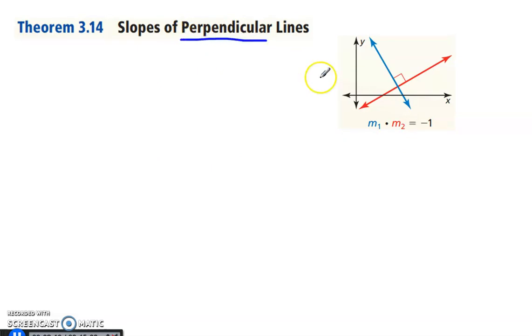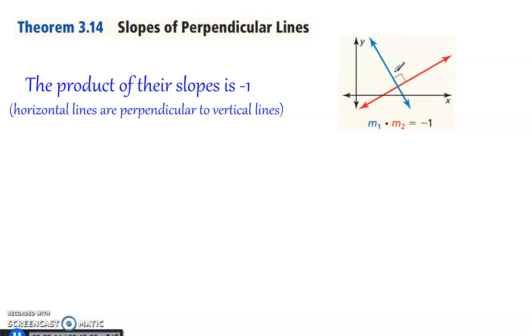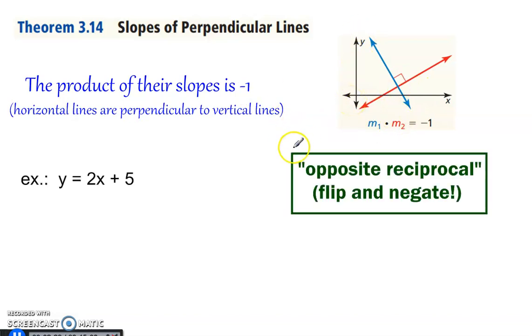Perpendicular lines, perpendicular lines have opposite slopes, opposite reciprocals. So the product of their slopes is negative 1. And horizontal lines are perpendicular to vertical lines. Remember, vertical lines don't have a slope. But I think we understand horizontal lines perpendicular to vertical. Otherwise, we have opposite reciprocals.